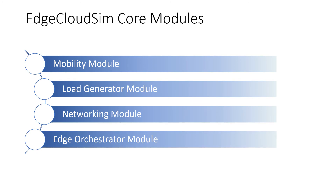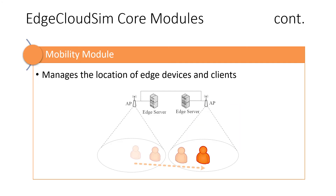H-Cloud Sim has four core modules: the mobility module, load generator module, networking module, and edge orchestrator module. Let me start with the mobility module, which is missing in conventional cloud computing simulators. The mobility module manages the location of the edge servers and the clients. It provides an X and Y axis pair for each component and updates them over time.